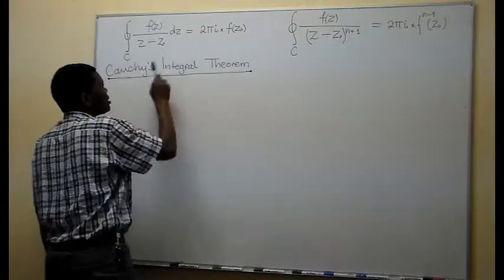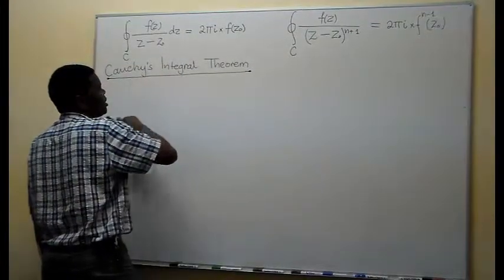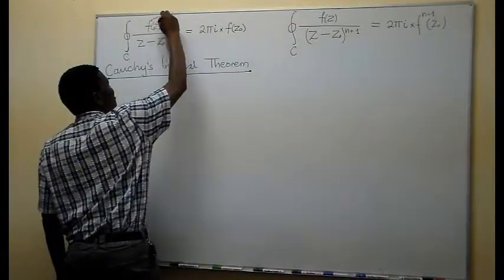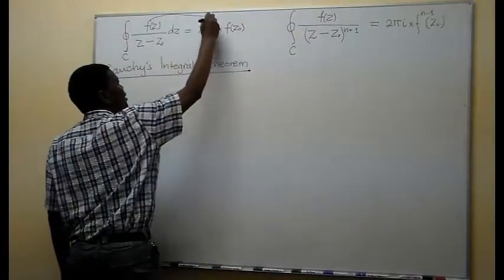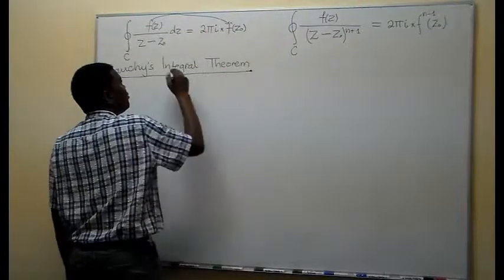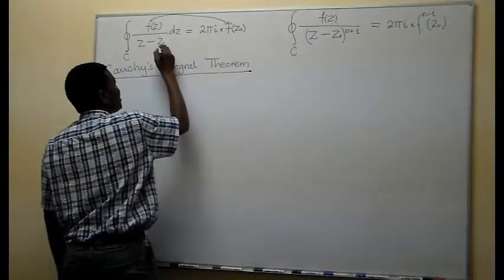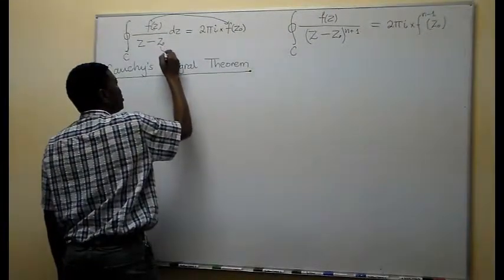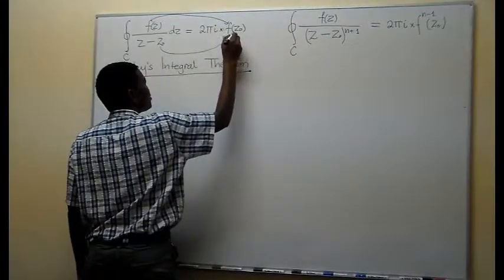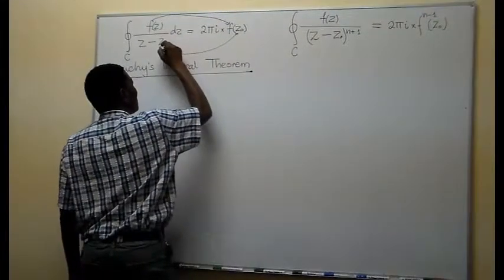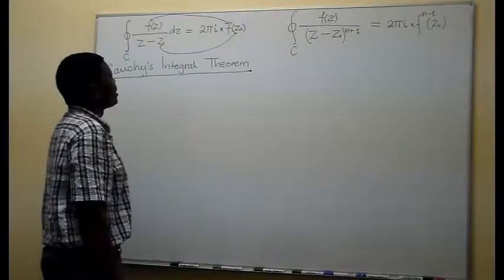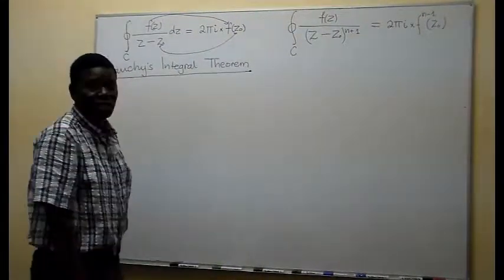If we isolate the numerator, the numerator alone is analytic in and on this curve. Under that situation, the value of the integral equals the function f(z) evaluated at the pole Z₀. So that's how schematically I can represent that.